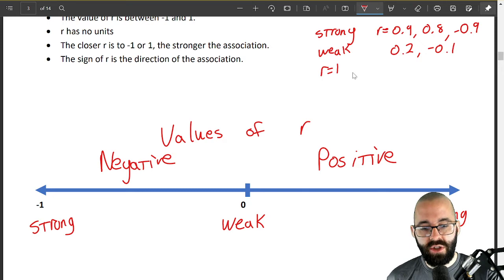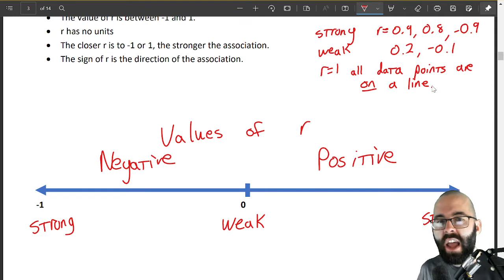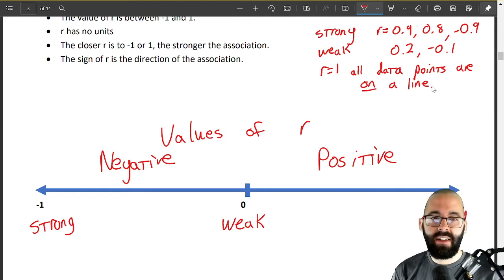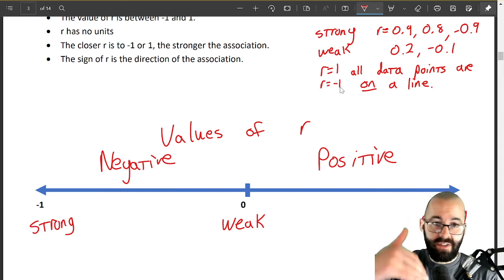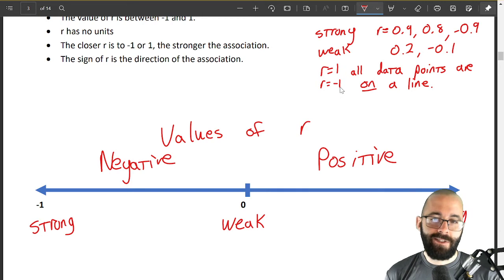r equals 1 means positive correlation, all data points are on a line. It's as strongly correlated as you can get—every single point is on that line. That's what an r value equaling one means. In reality we almost never get an r value equal to one. Same with r equals negative one. Again, that's just a negative sloped line, but it's perfect correlation.